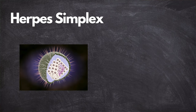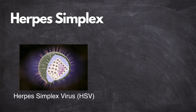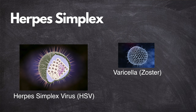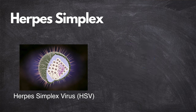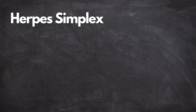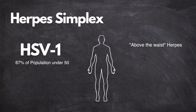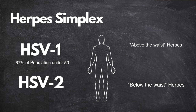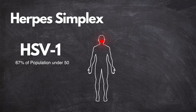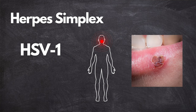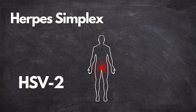Herpes simplex is a viral infection caused by the herpes simplex virus, which is different from the varicella virus we talked about just before. Herpes simplex is further divided into two categories: HSV1, colloquially termed above-the-waist herpes, affecting about 67% of the global population, and HSV2, termed below-the-waist herpes, affecting 13% of the population. HSV1 is typically associated with oral herpes, resulting in cold sores or fever blisters around the mouth or lips. HSV2 is primarily linked to genital herpes, affecting the genital region.